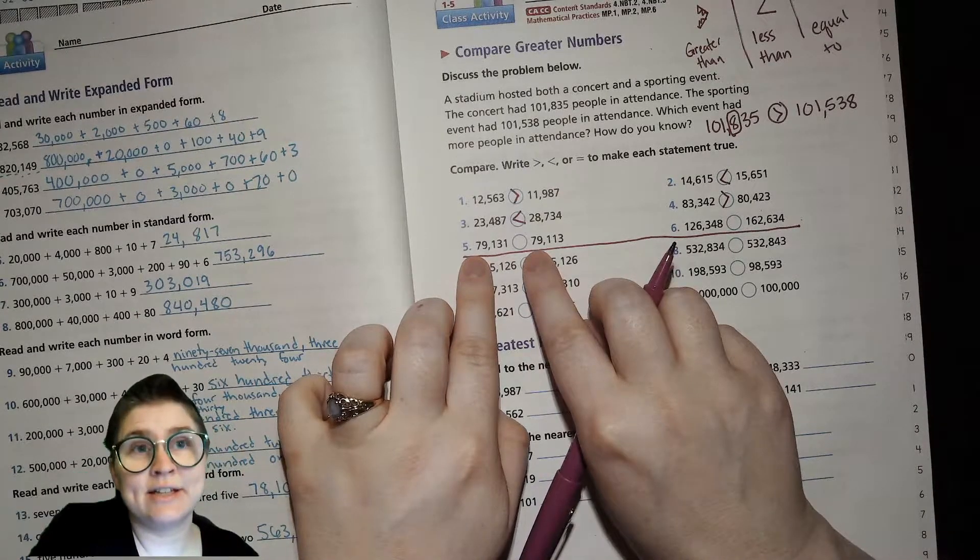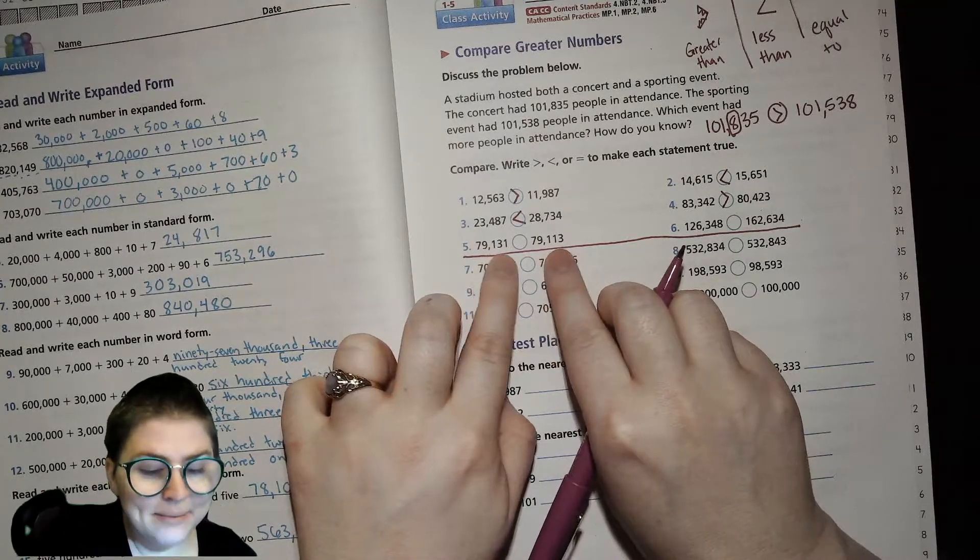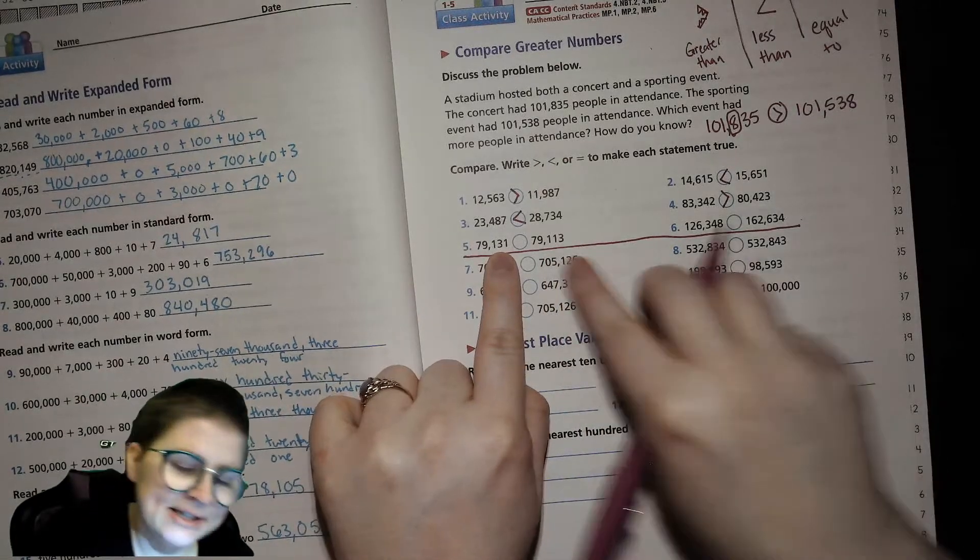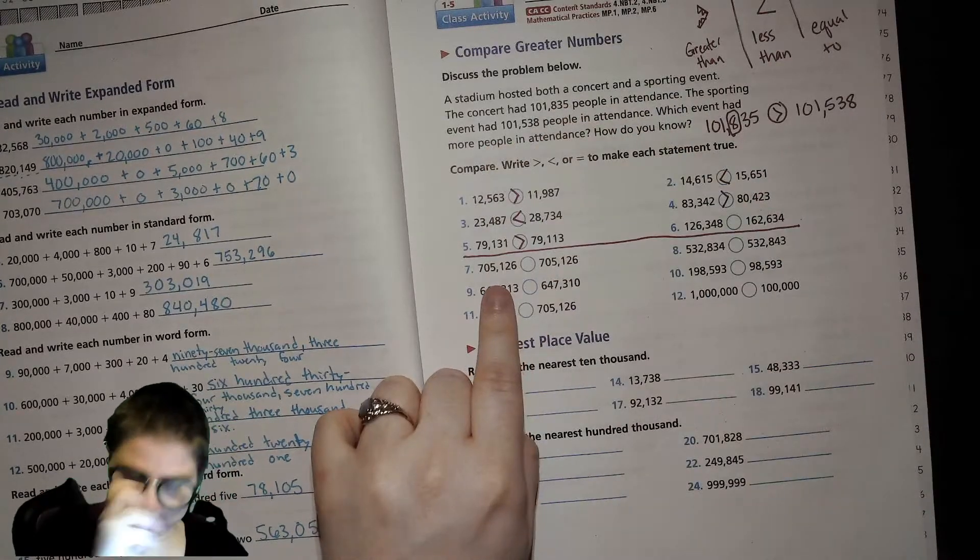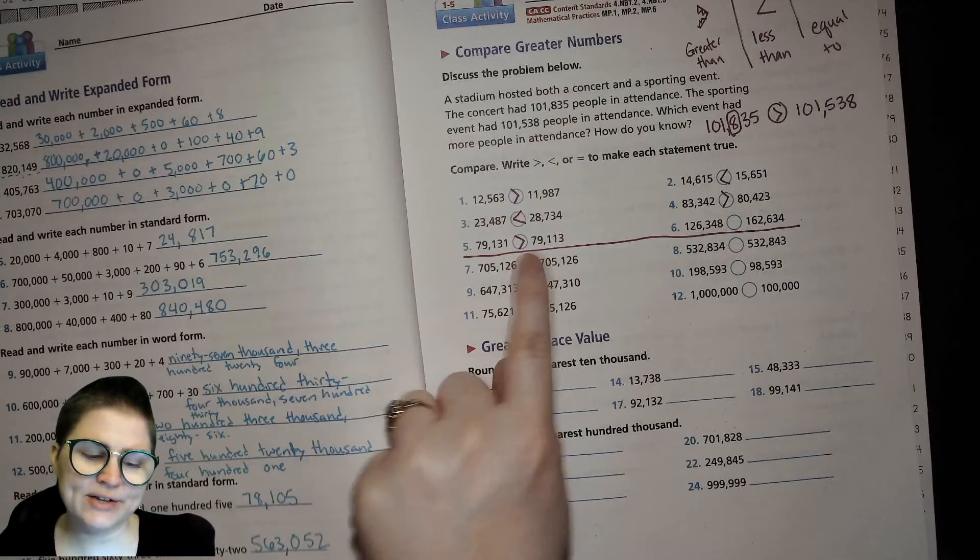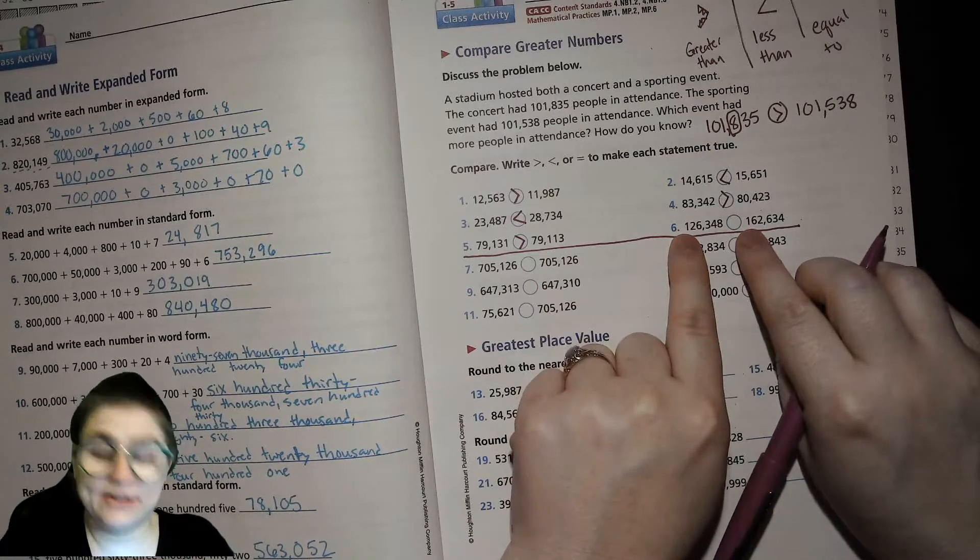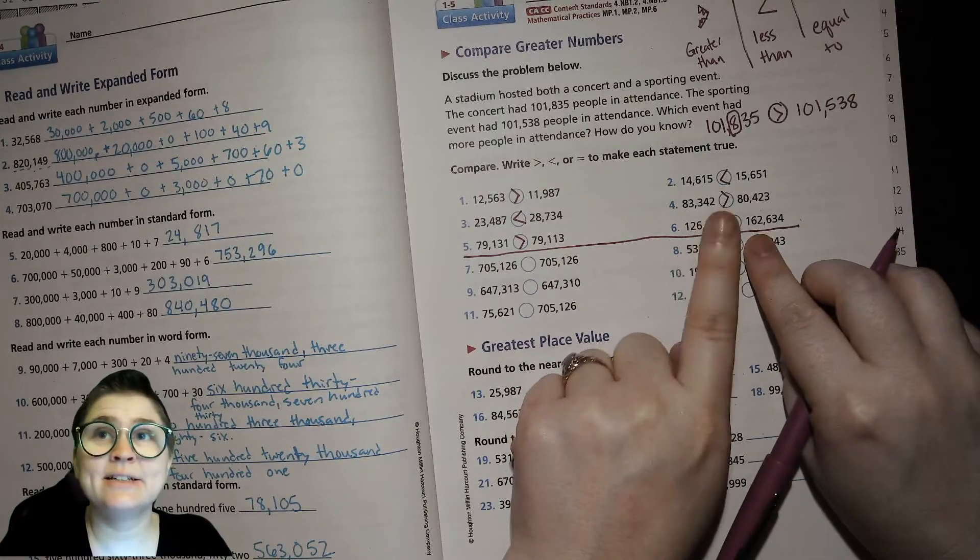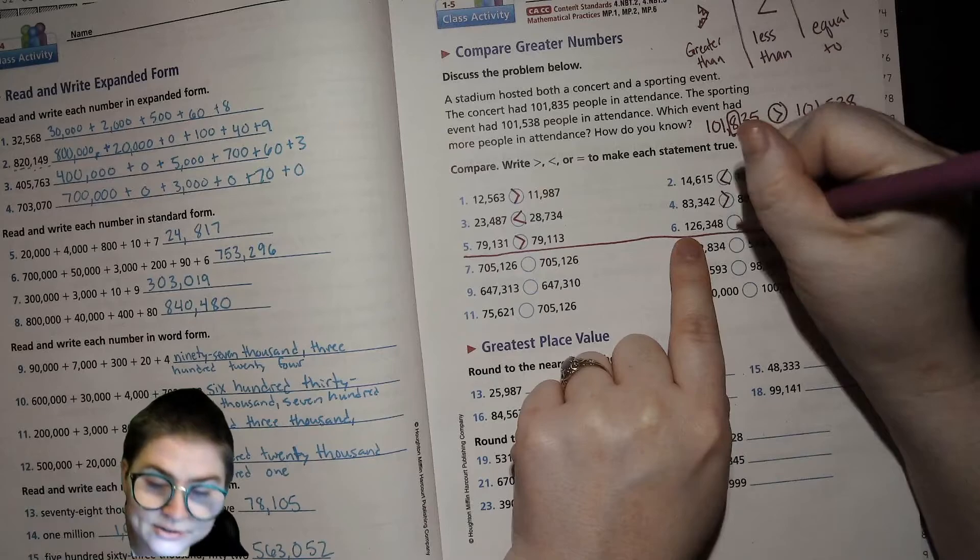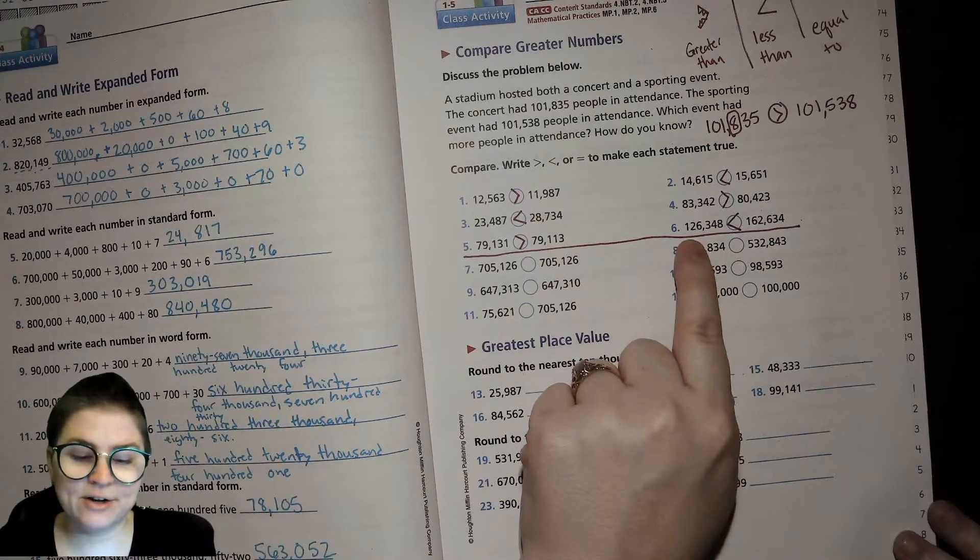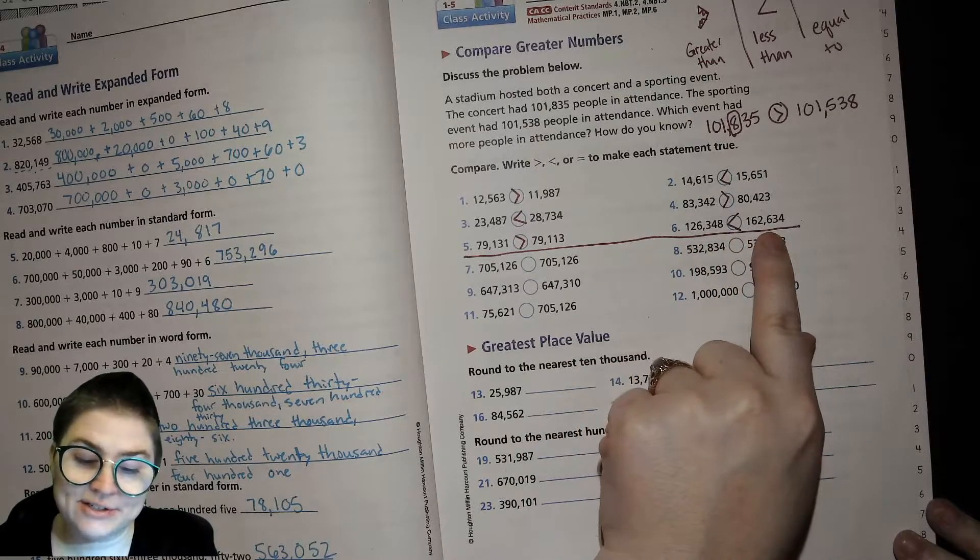Here we go. They both have 7 in the 10,000 place. They both have 9 in the 1,000 place. They both have 1 in the 100s place. But then this one has a 3 in the 10s place and this one has a 1 in the 10s place. So, what's bigger? The 3 in the 10s place. So, 79,131 is greater than 79,113. Okay. They both have 1 in the 100s place. But then 2 in the 10,000 place versus 6 in the 10,000 place. So, the one with the 6 is greater. So, we say 126,348 is less than 162,634.